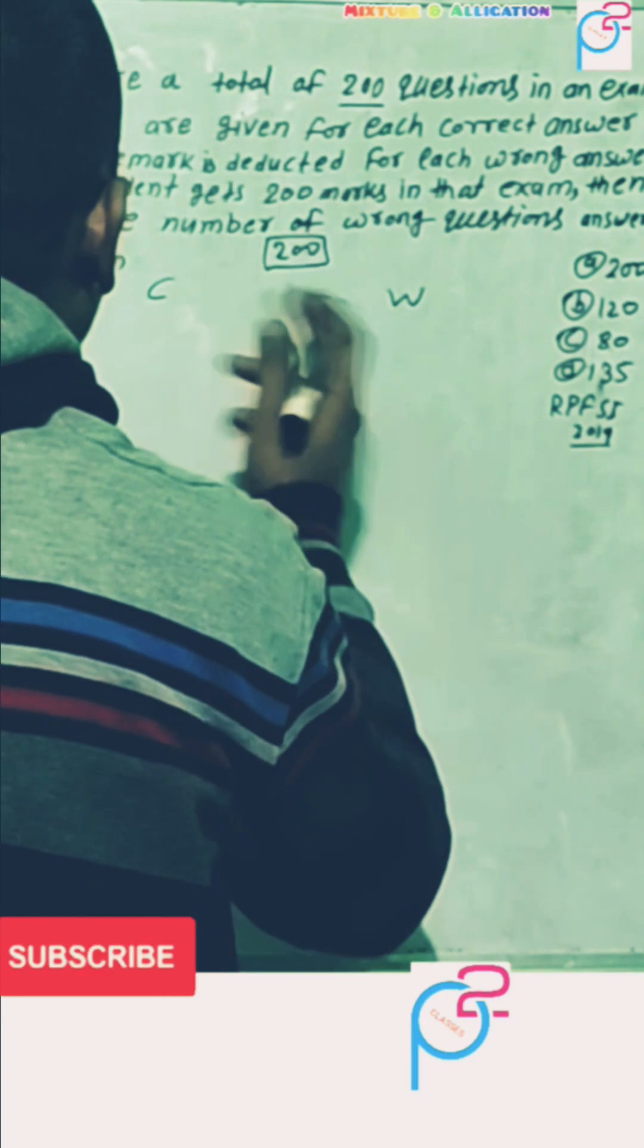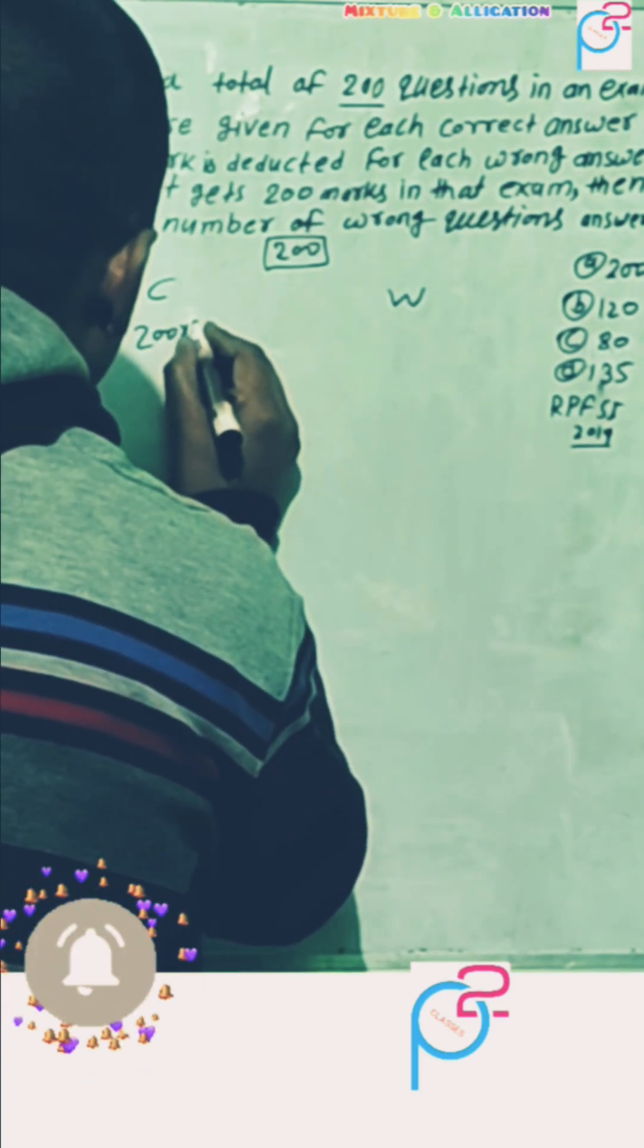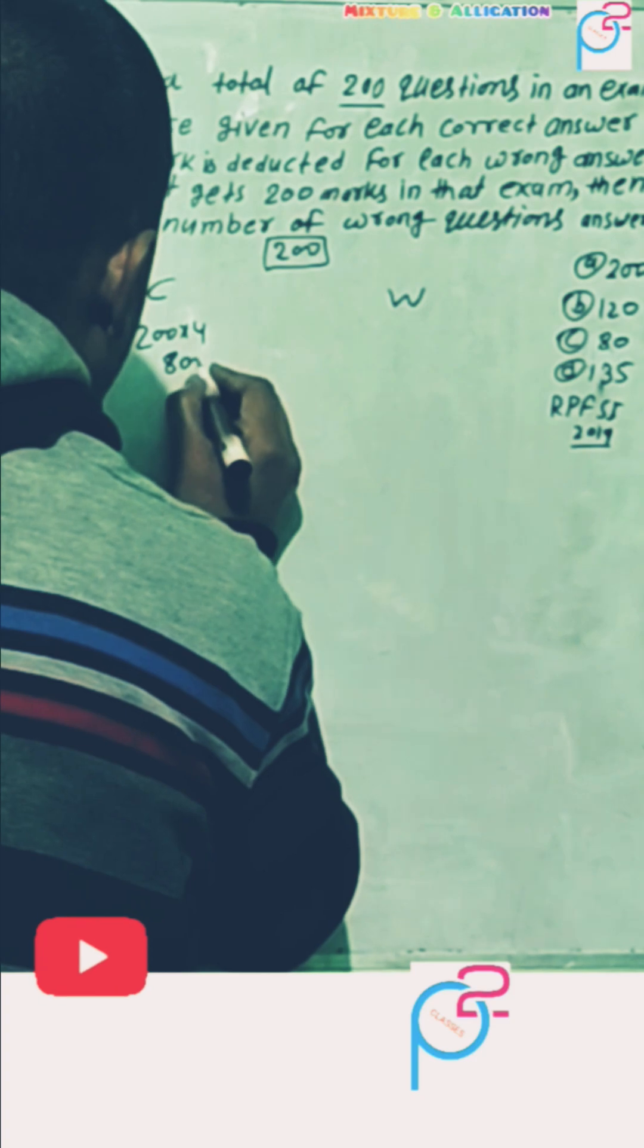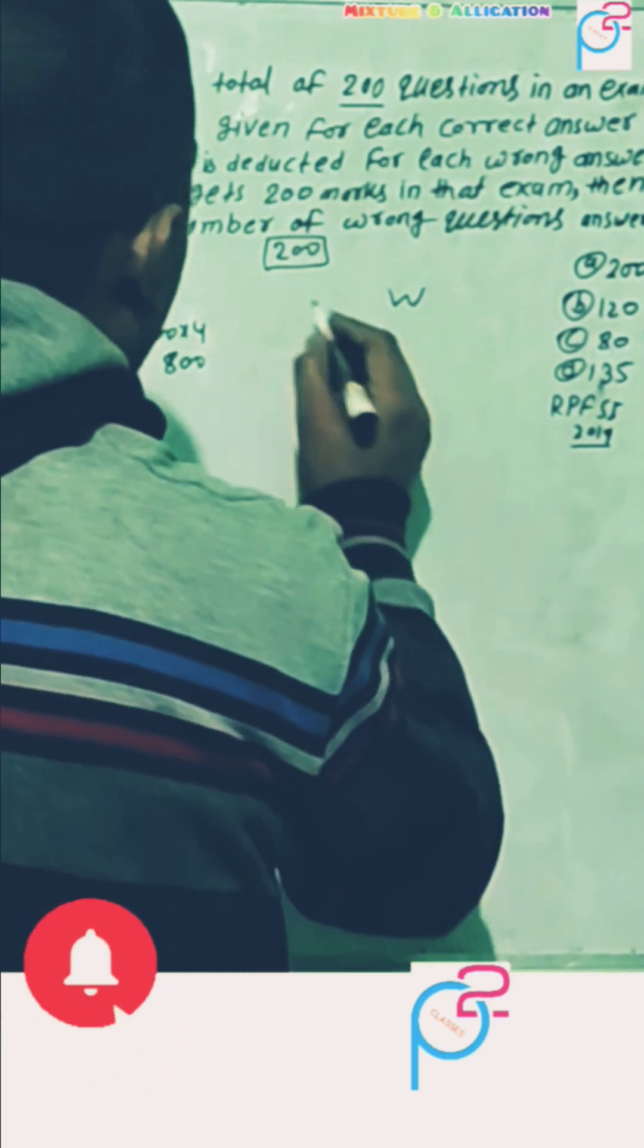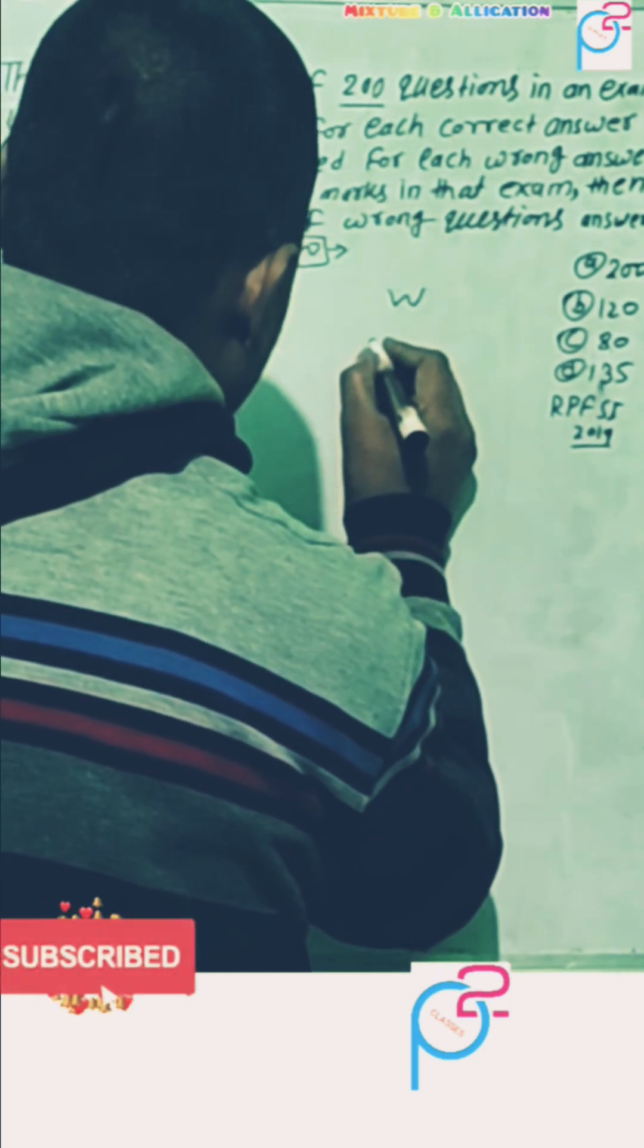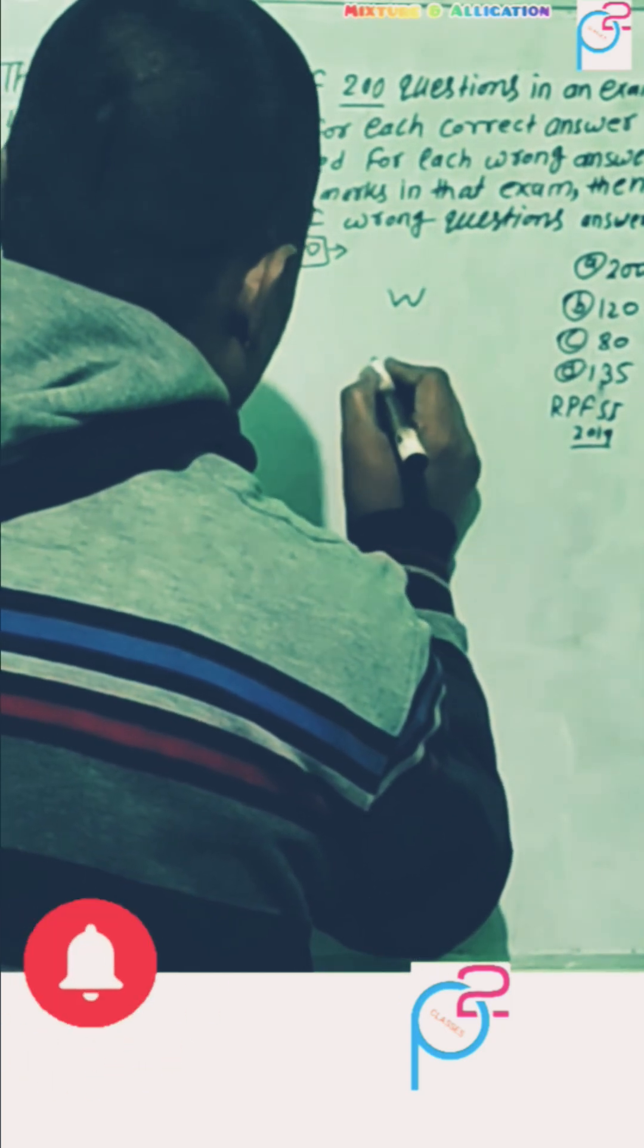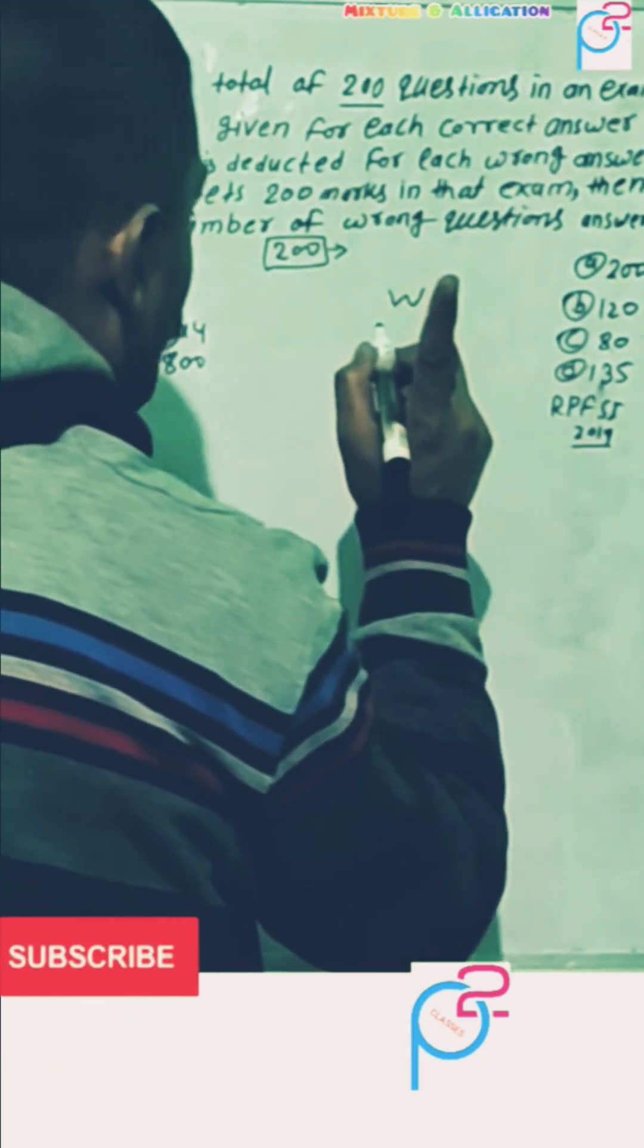Then he get 200 multiply 4 means 800 marks. And if he do all 200 question wrong, then he get minus 200 because one mark is deducted when they do wrong. Then you multiply minus one, then here get minus 200.